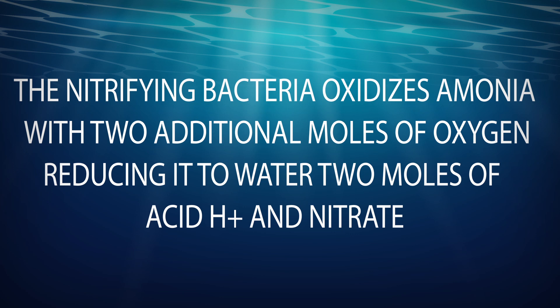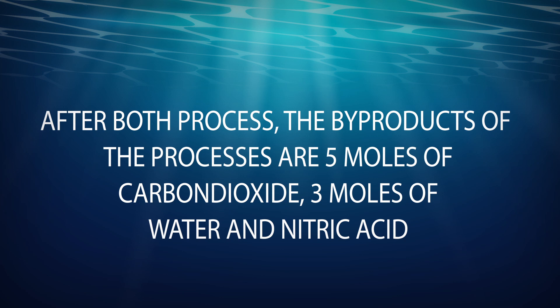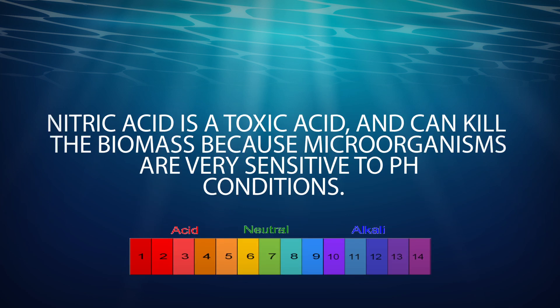The nitrifying bacteria process ammonia with two additional moles of oxygen, reducing it to water, two moles of H+ ions, and nitrate. After both processes, the byproducts are five moles of carbon dioxide, three moles of water, and nitric acid. Nitric acid is a toxic acid and can kill the biomass because microorganisms are very sensitive to pH conditions.